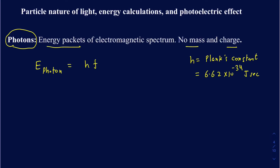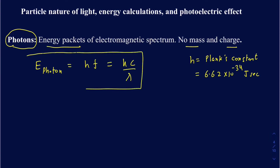In addition to this formula — Planck's constant times the frequency — you may also see this formula written in books: E = hc over lambda. That's just a manipulation using the relationship between frequency and wavelength. Make sure you're familiar with this equation used to calculate the energy associated with a photon.